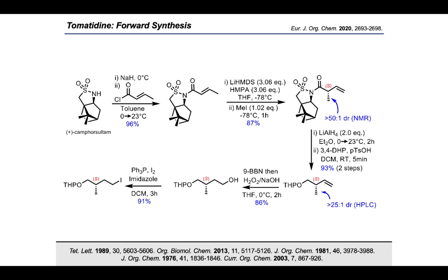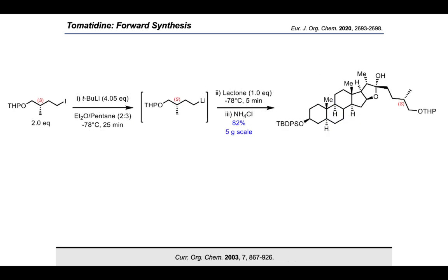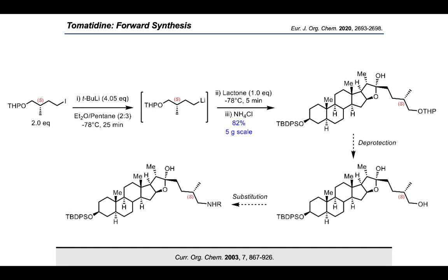A few transformations posed challenges at scale. For the alkylation reaction, HMPA and methyl iodide, both carcinogenic agents, had to be distilled from calcium iodide. The desired alkyl iodide was very unstable and had to be synthesized in the dark and used directly after purification, as it decomposed even when stored under argon in the freezer. Using the previously optimized conditions to join the two fragments, the adduct was generated in 82 percent yield on a 5-gram scale, with a total of 8.8 grams produced. However, when attempting THP ether deprotection to introduce the nitrogen via a Mitsunobu reaction, we were never able to isolate the primary alcohol.